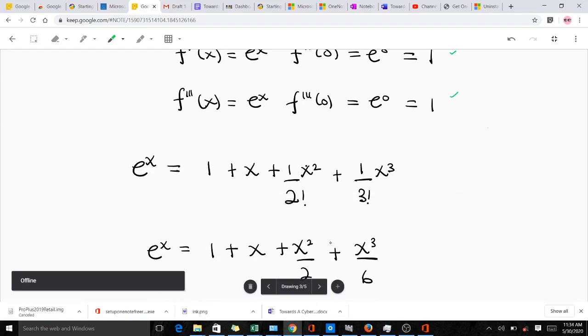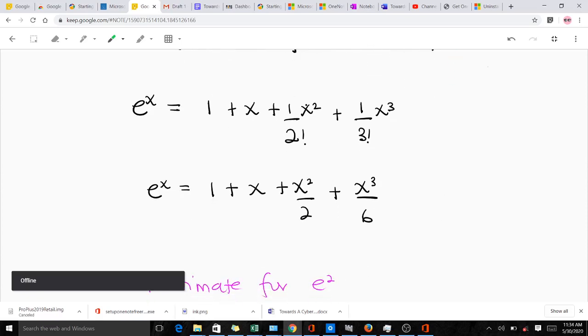When we do further simplification, we are going to get 1 plus x plus x squared over 2, since 2 factorial is 2, then plus x cubed over 6, since 3 factorial is 6. This here happens to be the Maclaurin series of e^x up to the 4th term.